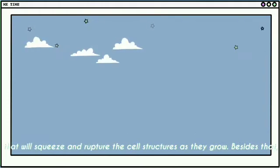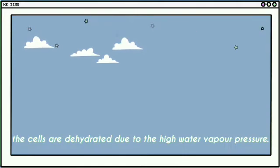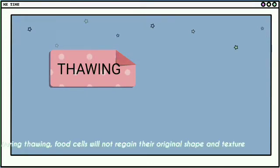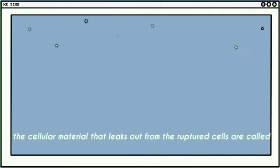Besides that, the cells are dehydrated due to the high water vapor pressure. During thawing, food cells will not regain their original shape and texture and the cellular material that leaks out from the ruptured cell are called drip loss.